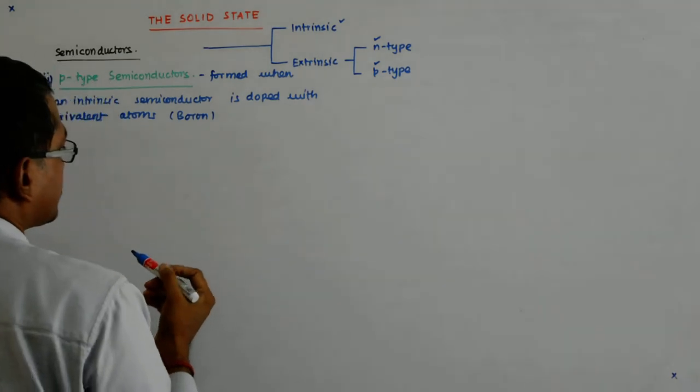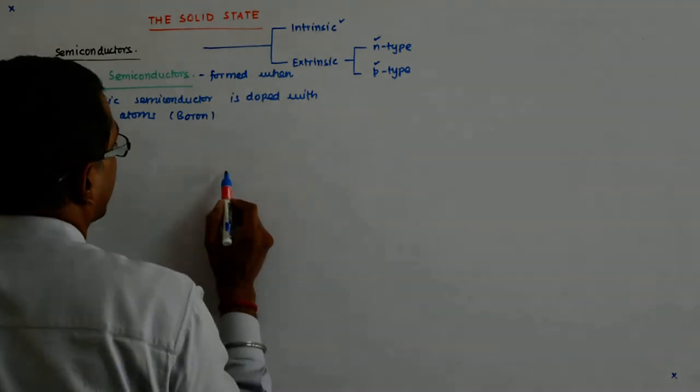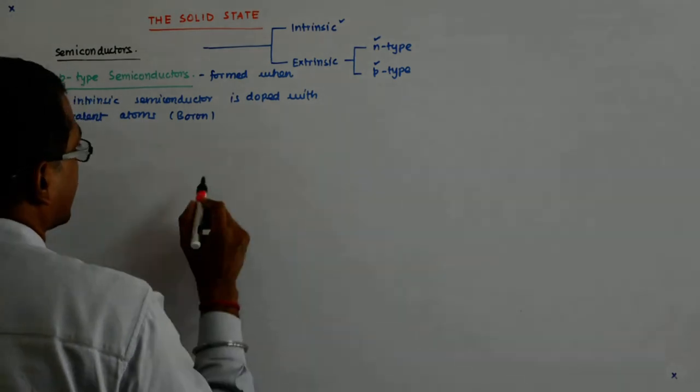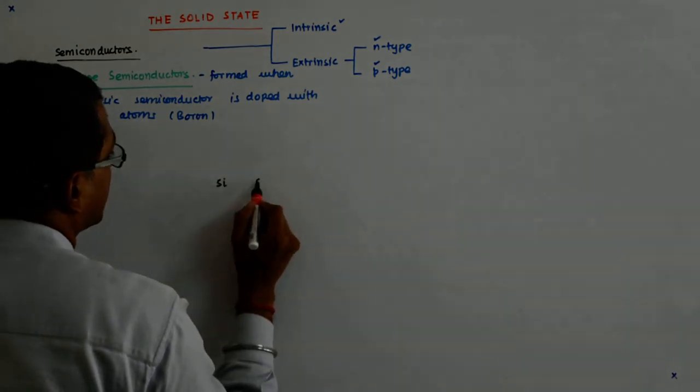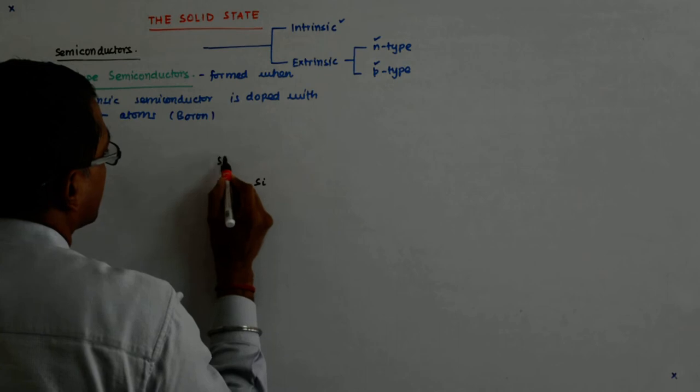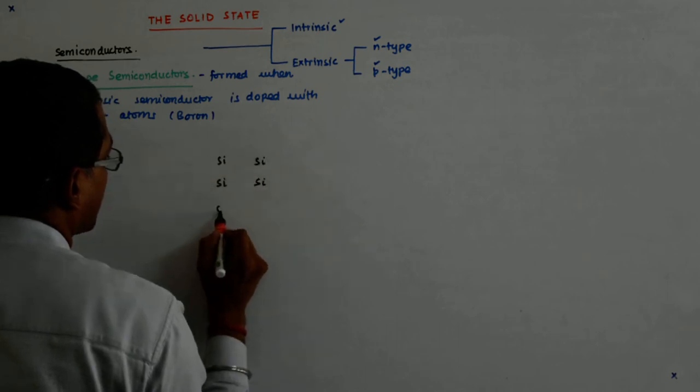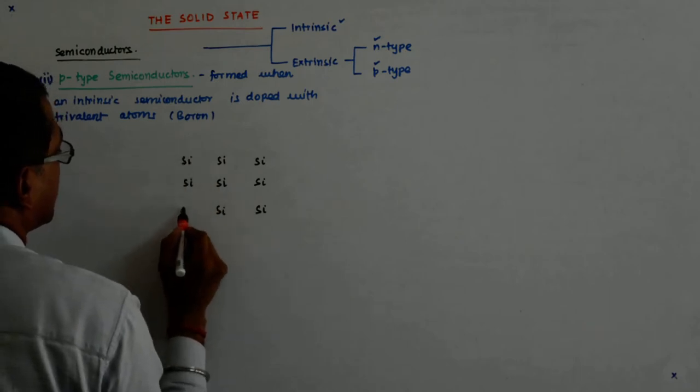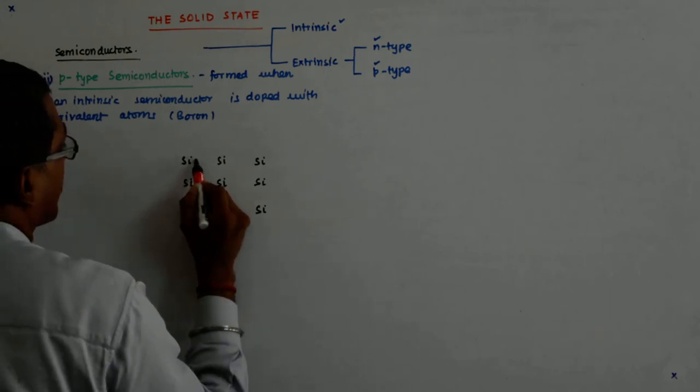Our lattice is again the same. Our lattice is like this, something like this: silicon, silicon, silicon, silicon, silicon.